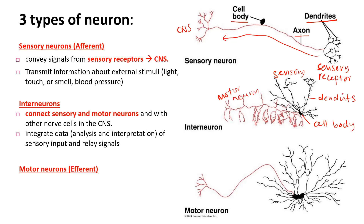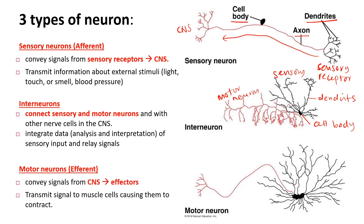The third type is motor neurons. They convey signals from the CNS to effectors. The dendrites receive stimuli from interneurons or from the CNS and send signals to effectors. An example of an effector is a muscle cell. Motor neurons transmit signals to muscle cells, causing them to contract.